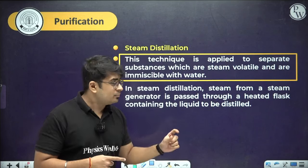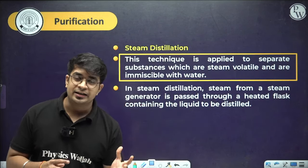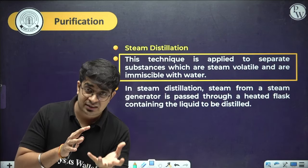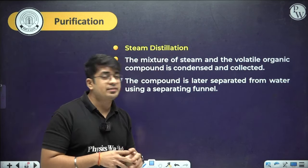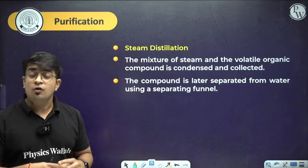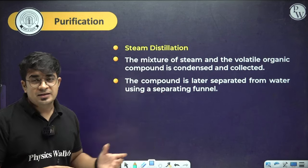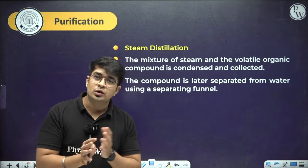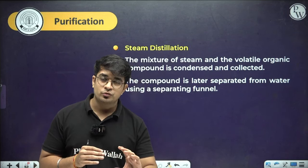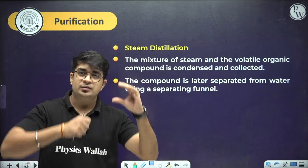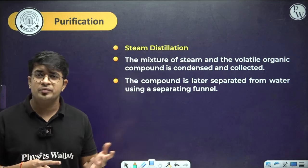In steam distillation, steam from a generator is passed through a heated flask containing the liquid to be distilled. The steam volatile component travels with the steam and the mixture is condensed and collected. Since the organic compound and water are immiscible, they form separate layers and can be separated using a separating funnel — the denser layer at the bottom is removed first, then the organic compound.